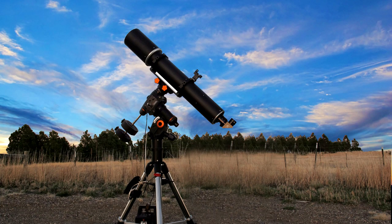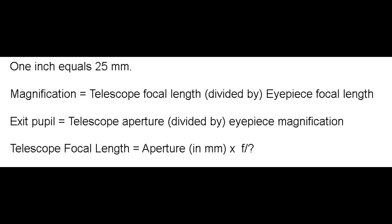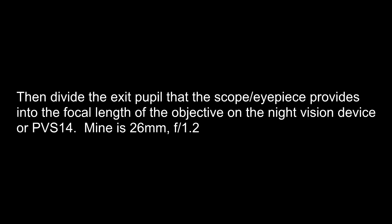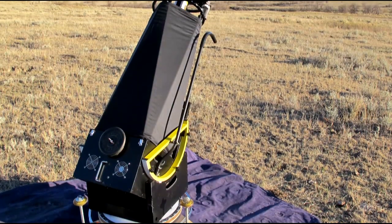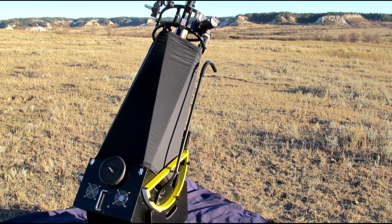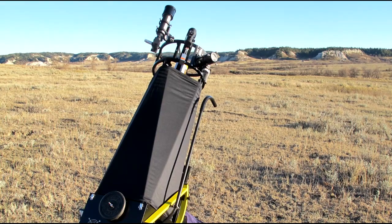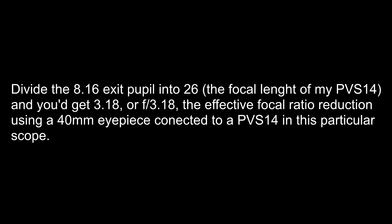Here's some math to help you build an effective night vision platform. Assume a 6-inch f/8 telescope: that gives 48 inches of focal length (6 × 8), converting to 1,200mm (48 × 25mm). With that, you can determine the focal reduction an eyepiece provides when attached to a PVS-14. Divide the exit pupil the scope-eyepiece combination provides into the focal length of the PVS-14. For example, using a 40mm eyepiece in a 12-inch f/4.9 Dob gives an 8.16mm exit pupil. Dividing 8.16 into 26 — the focal length of the PVS-14 — gives 3.18: the effective focal reduction when using that 40mm eyepiece in that scope.